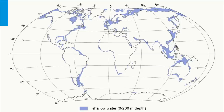The continental shelves are covered by sediments which were eroded during millions of years from continental rock. On land, mechanical and chemical processes caused the breakdown of rock into smaller particles. These particles were then carried to the continental shelf by rivers, glaciers and wind.